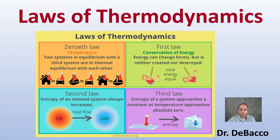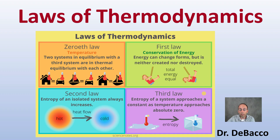Let's get into the laws of thermodynamics. There is a zeroth law, which has to do with temperature, where two systems in equilibrium with a third system are in thermal equilibrium with each other. The first law is the conservation of energy, where energy can change forms but can neither be created nor destroyed. The second law looks at entropy of an isolated system, which always increases, moving heat flow from hot areas to cold areas. The third law has to do with entropy of a system approaching a constant as temperature approaches absolute zero — that's where molecular movement stops.